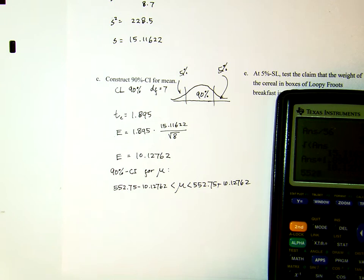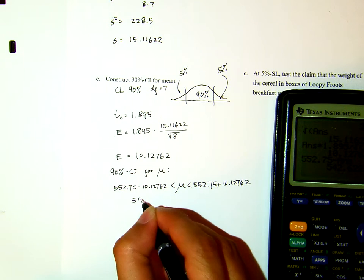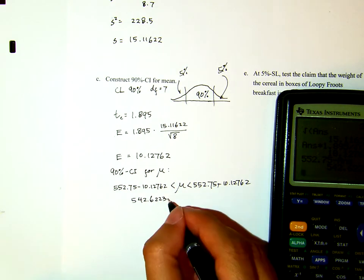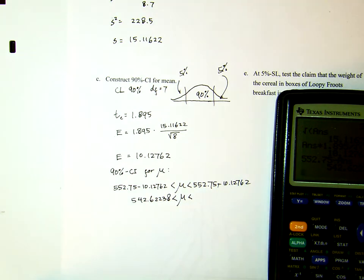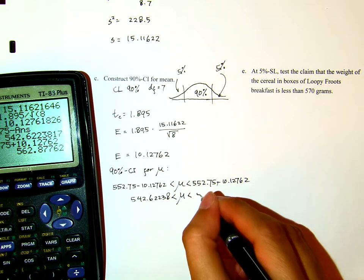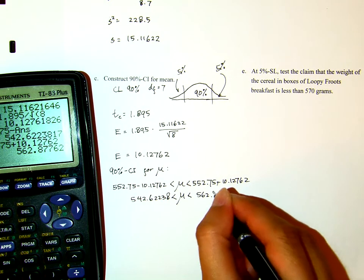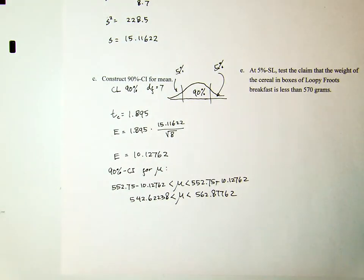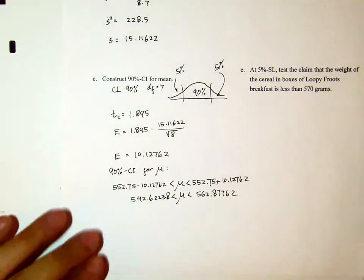Using a calculator, 552.75 minus 10.12762 equals 542.62238. So the confidence interval is 542.62238 less than mu less than 552.75 plus 10.12762, which equals 562.87762. Of course, in real life you would do reasonable rounding, but for now we won't round.